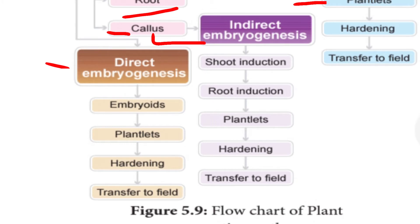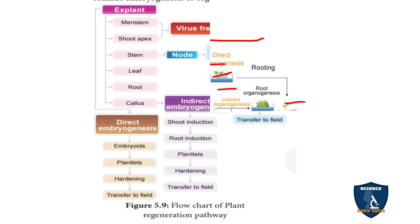Direct means embryoids are used in this process — direct embryogenesis. The embryoids are used; from the embryoids, the plantlets are developed. The plantlets are transferred to the nursery beds and to the natural environment. That process is called hardening and transfer to the field. This is the flowchart of plant regeneration.